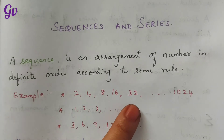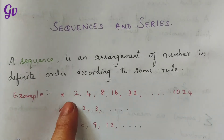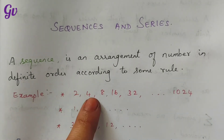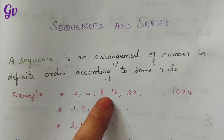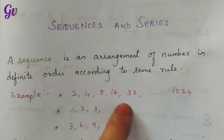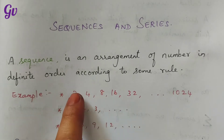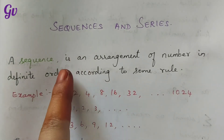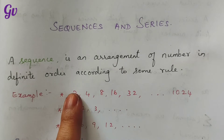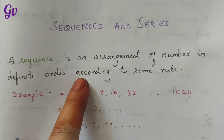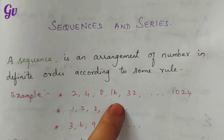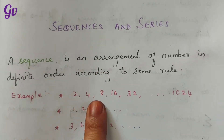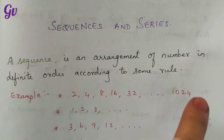For example, consider the sequence 2, 4, 8, 16, 32, etc. Starting from 2, the next term is 2 times 2 equals 4, then 4 times 2 equals 8, then 8 times 2 equals 16, and so on. We can generalize this as an equal to 2 to the power n. When n equals 1, we get 2; n equals 2 gives 4; n equals 3 gives 8; n equals 4 gives 16. So this is a sequence with general term 2^n.